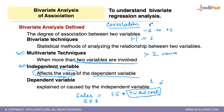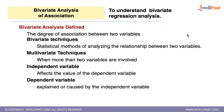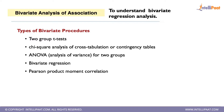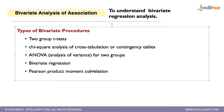In bivariate analysis of association, there are different types of bivariate procedures: the two-group t-test, chi-square test, analysis of variance (ANOVA), bivariate regression, and Pearson product-moment correlation.